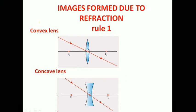Rule 1 is: when a ray of light is incident on the optical center — the center point of the lens is the optical center — and a ray of light is inserted at the optical center, after refraction, it will move undeviated.